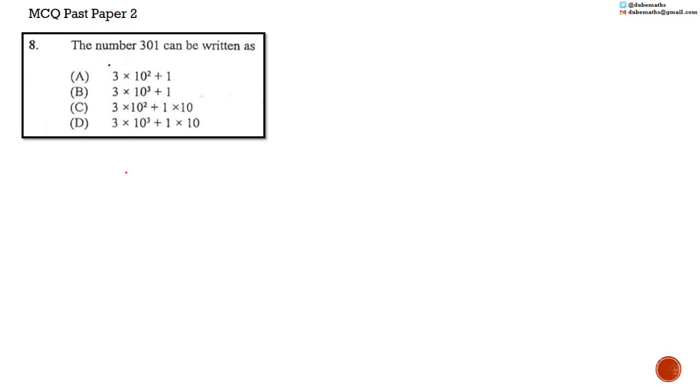301 is 300 plus 0 tens plus 1, which is the same as 3 multiplied by 100 plus 0 multiplied by 10 plus 1 multiplied by 1. We're omitting these zeros because 0 multiplied by 10 equals 0. It's 3 multiplied by 100 plus 1. Which answer is the same as 3 multiplied by 100 plus 1? We know that 10 squared is the same as 100. So, this is the same as 3 multiplied by 10 squared plus 1. So, the answer is A.